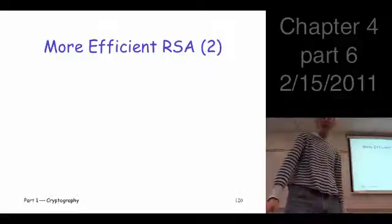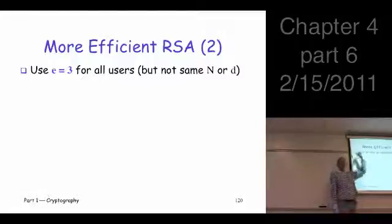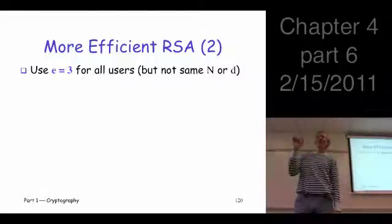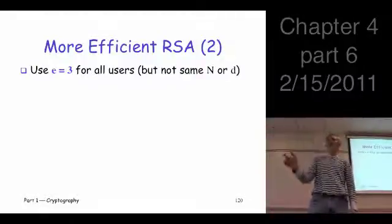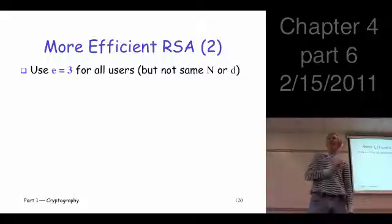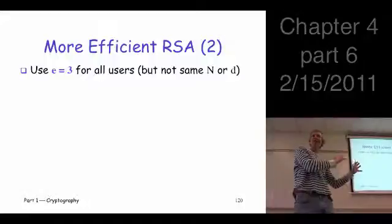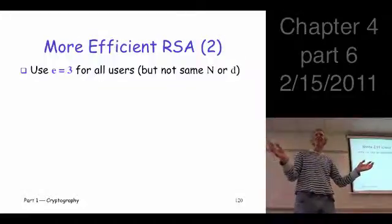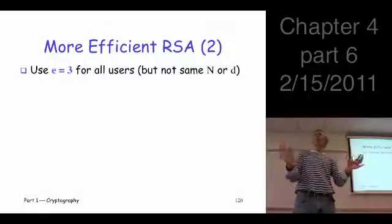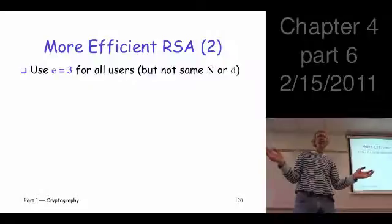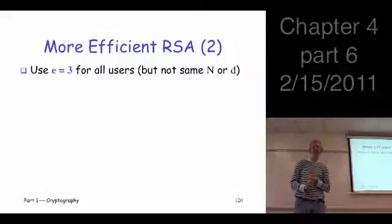So here's another trick that people often use to speed up RSA. We can choose E equal 3. Remember, when we're choosing the key, what do we do? We choose the P and Q. We get P minus 1, Q minus 1. Then we choose E relatively prime. Usually 3 works. If it doesn't, throw away P and Q and start over. So we can make it so that E is equal to 3 for everybody. Everybody can use E equal 3.